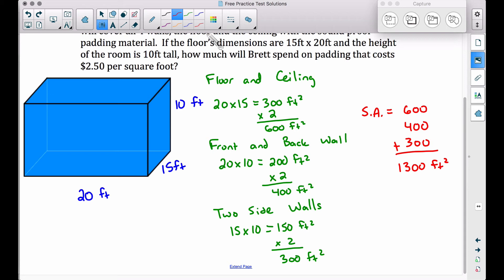Now, let's make sure we answer the question. How much will Brett spend on padding that costs $2.50 per square foot? Square foot. Again, a big hint there. We're on the right track because we're using area. Area is in square units.